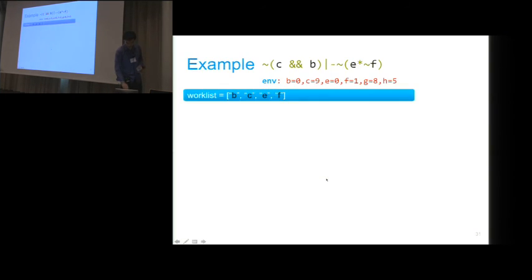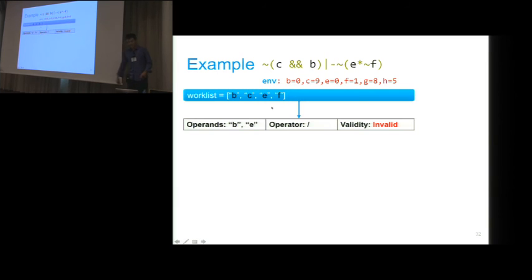Let me walk you through an example. Suppose I would like to synthesize this expression, and this is the environment at that program point. At first, I will sample several variables to initialize the worklist. In this case, I have B, C, E, F in the list. I started the synthesis. In the first iteration, I randomly sample two variables from the list, which is B and E. I also randomly propose a binary operator, which is a division. Then I check whether the binary expression B divided by E is valid or not. But when you look at the environment here, you find that E is zero. So it's a division by zero error. Therefore, we reject this proposal.